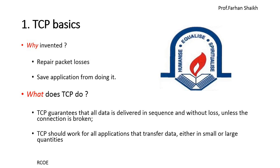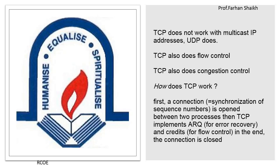TCP should work for all applications that transfer data, either in small or large quantities. We can send small packets or large packets requiring very large bandwidth, with less chance of data loss. However, TCP does not work with multicast IP addresses, so we need to understand the difference between multicast and unicast.